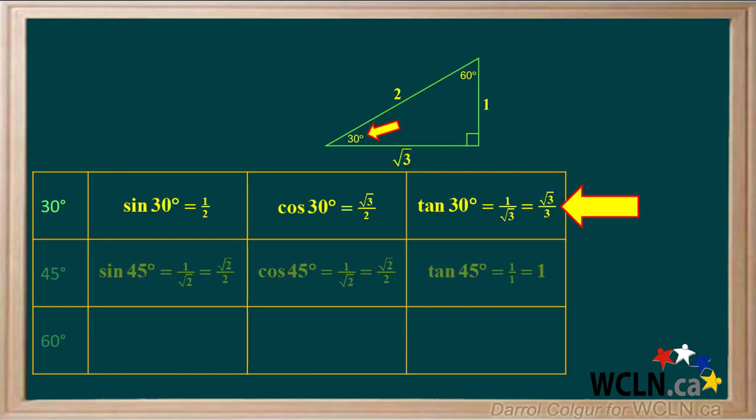Using the 30-60-90 triangle, we get the exact sine, cosine, and tangent of 30 degrees. See how each of these are obtained from the diagram.